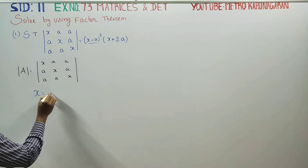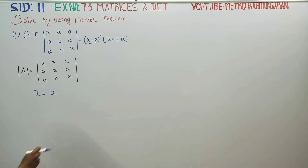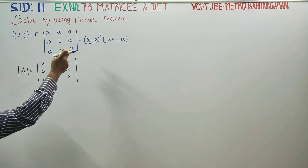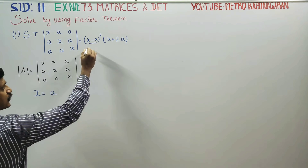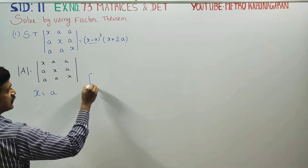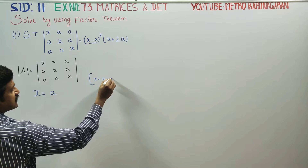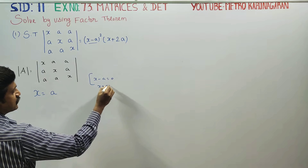Let x is equal to a. If we choose x minus a equal to zero, then x equals a. This is the rough work for applying the factor theorem — x minus a is equal to zero.